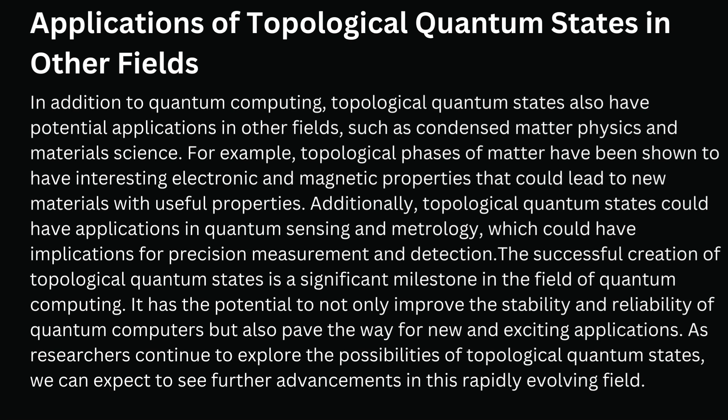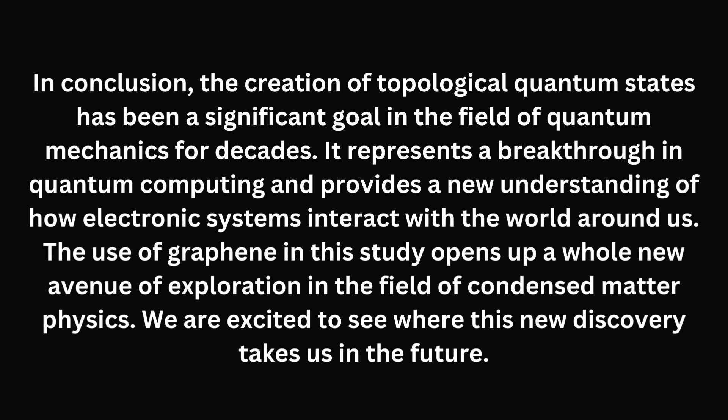The successful creation of topological quantum states is a significant milestone in the field of quantum computing. It has the potential to not only improve the stability and reliability of quantum computers, but also pave the way for new and exciting applications. As researchers continue to explore the possibilities of topological quantum states, we can expect to see further advancements in this rapidly evolving field. In conclusion, the creation of topological quantum states has been a significant goal in the field of quantum mechanics for decades. It represents a breakthrough in quantum computing and provides a new understanding of how electronic systems interact with the world around us. The use of graphene in this study opens up a whole new avenue of exploration in the field of condensed matter physics. We are excited to see where this new discovery takes us in the future.